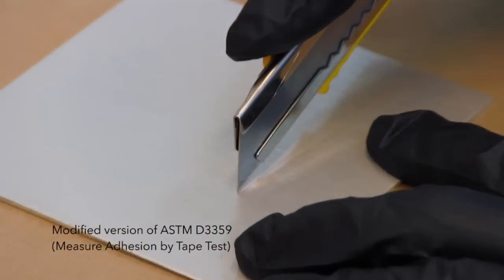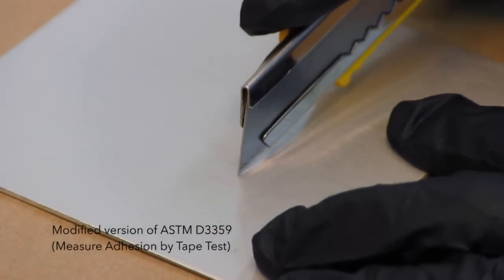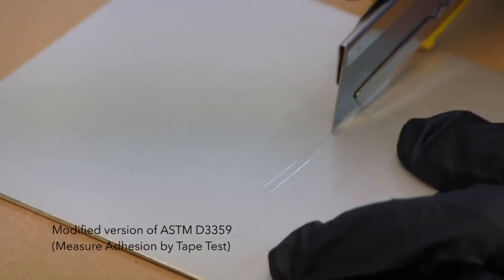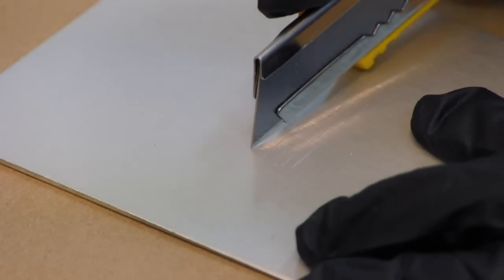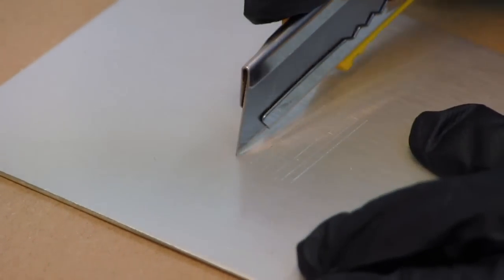Use a cutting tool such as a sharp razor blade, scalpel, or knife to make 6 horizontal cuts through the coating to the substrate. Each cut should be approximately ¾ inch long and about ⅛ inch apart.